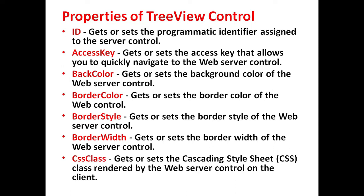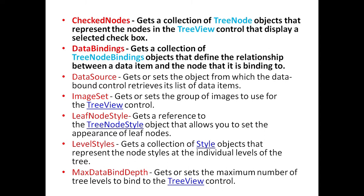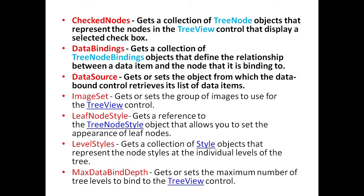CssClass is used to get or set the cascading style sheet class rendered by the web server control. CheckedNodes property is used to get a collection of tree node objects that represent the nodes in the TreeView control that display a selected checkbox. DataBindings property is used to get a collection of tree node binding objects that define the relationship between a data item and the node it is binding to. DataSource property is used to get or set the object from which the data-bound control retrieves its list of data items.